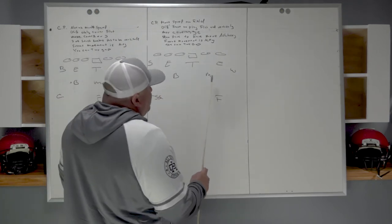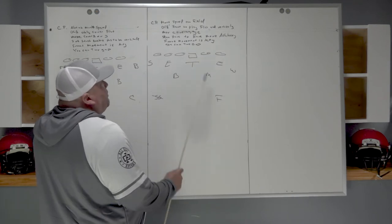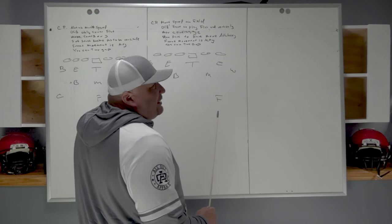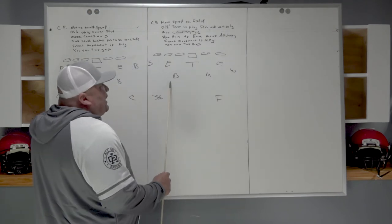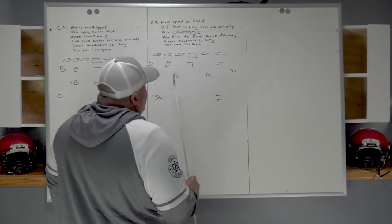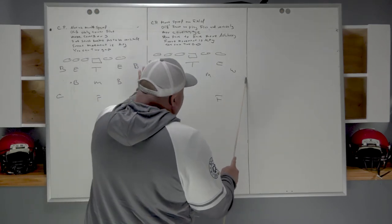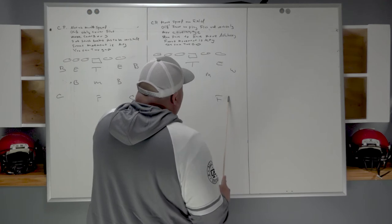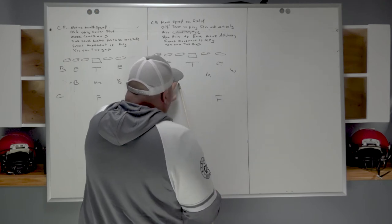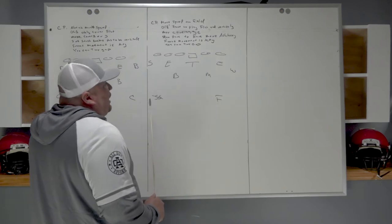We always want this guy, the Mike - this is why I call him the Mike - he's always going to play the back door. Meaning if the ball is going away, we want him playing A to B, playing the back door, chasing things from the backside, making things happen. This guy's got to be a bigger, more physical player and more versatile.